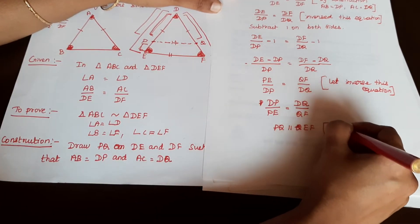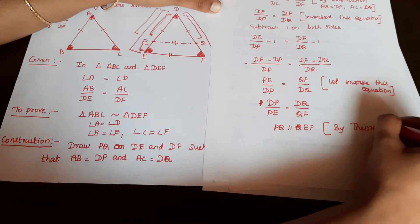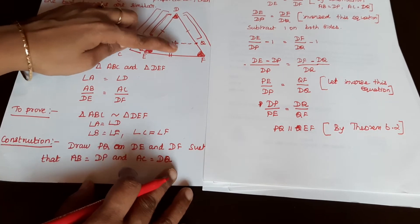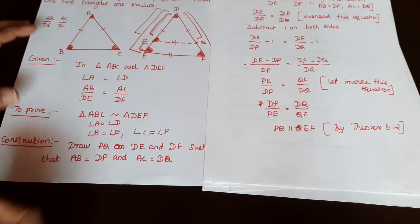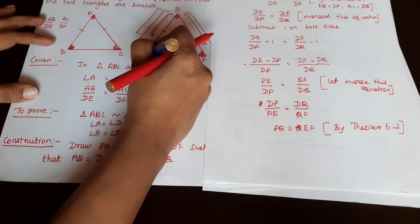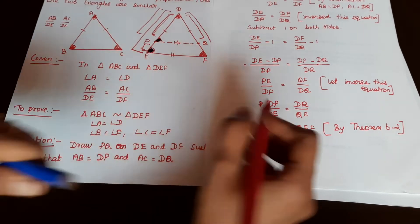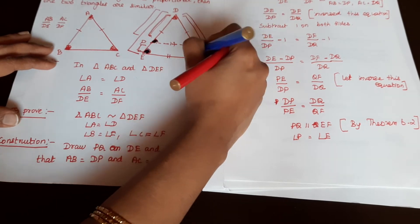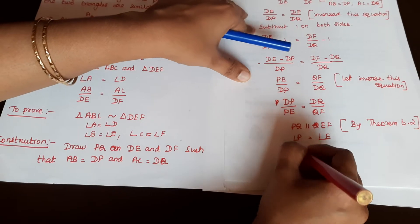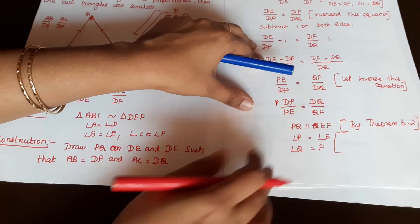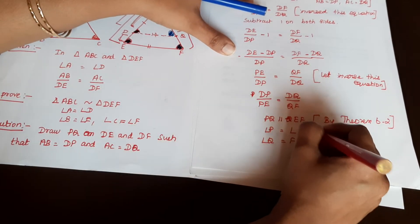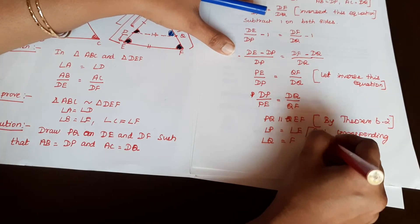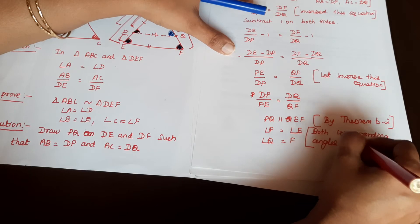By theorem 6.2, since PQ is parallel to EF, the corresponding angles are equal: angle Q equals angle F. These corresponding angles are equal.